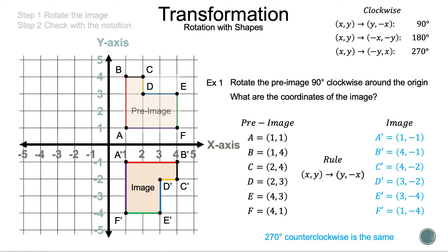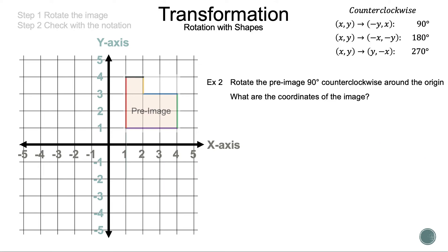Another special thing about this: 270 degrees counterclockwise gives the same result, because 270 + 90 = 360 degrees — a complete circle, so where you begin is where you end up. Now let's take a look at Example 2. The question asks: rotate the pre-image 90 degrees counterclockwise around the origin — what are the coordinates of the image?